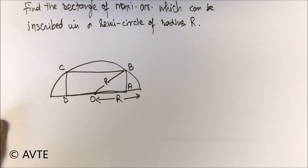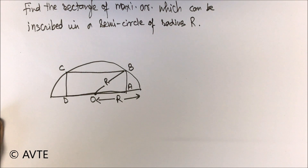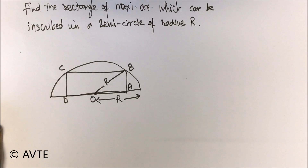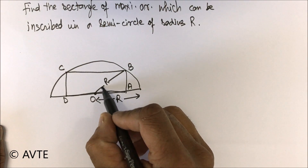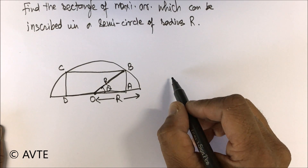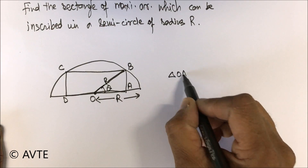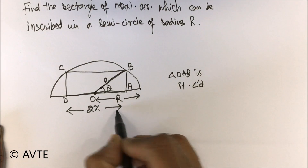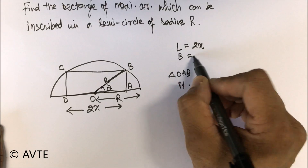Because the area of the rectangle is length times breadth and they are linear, using Pythagoras would introduce a square root, making differentiation lengthy and troublesome. So we suggest using trigonometry. If I take angle theta, triangle OAB works as a right-angled triangle. Let the length be 2x and the breadth be y units.